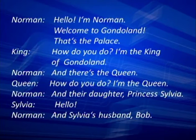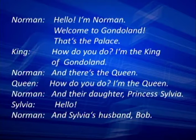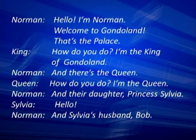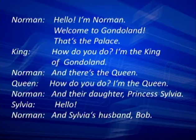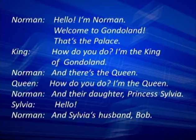Hello. I'm Norman. Welcome to Gondoland. That's the palace. And there is the king. How do you do? I'm the king of Gondoland. And there is the queen. How do you do? I'm the queen. And their daughter, Princess Sylvia. Hello. And Sylvia's husband.